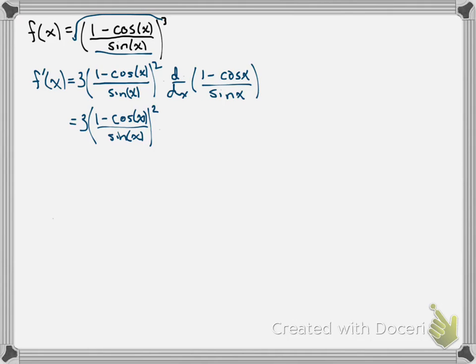It's the denominator, sine x, times the derivative of the numerator. The derivative of one is zero, and the derivative of negative cosine x is sine x.